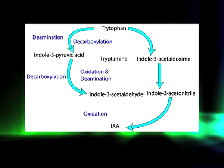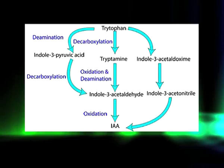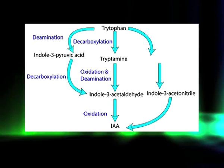In the TAM pathway, the order of transamination and decarboxylation is reversed: tryptophan first undergoes decarboxylation to form tryptamine, which is then oxidized and deaminated to produce indole-3-acetaldehyde, which is further oxidized to produce IAA. In the indole-3-acetonitrile (IAN) pathway, tryptophan is first converted to indole-3-acetaldehyde, which is converted to indole-3-acetonitrile (IAN); indole-3-acetamide is finally converted to IAA by the enzyme nitrilase.